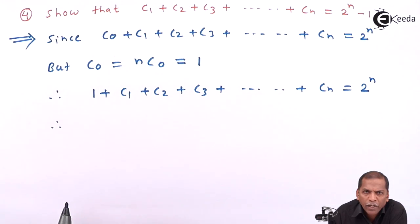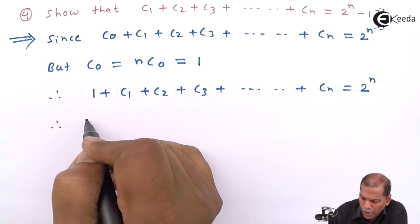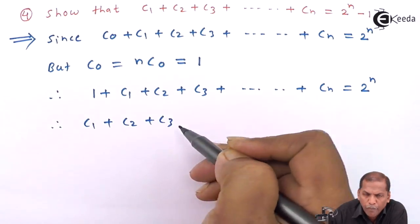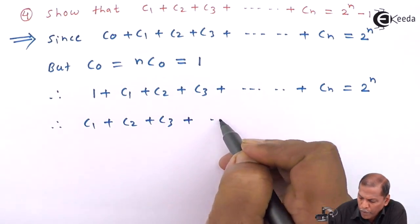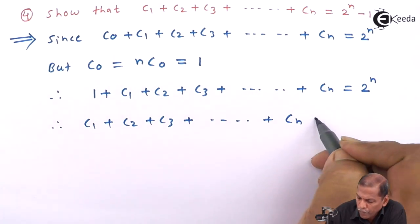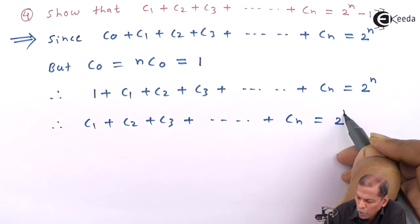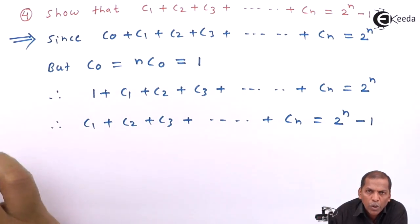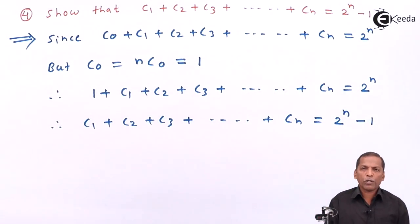So the next step will be C1 plus C2 plus C3 plus going on up to plus Cn, and that equals 2 raised to n minus 1. So this is the required solution for the given problem. Thank you.